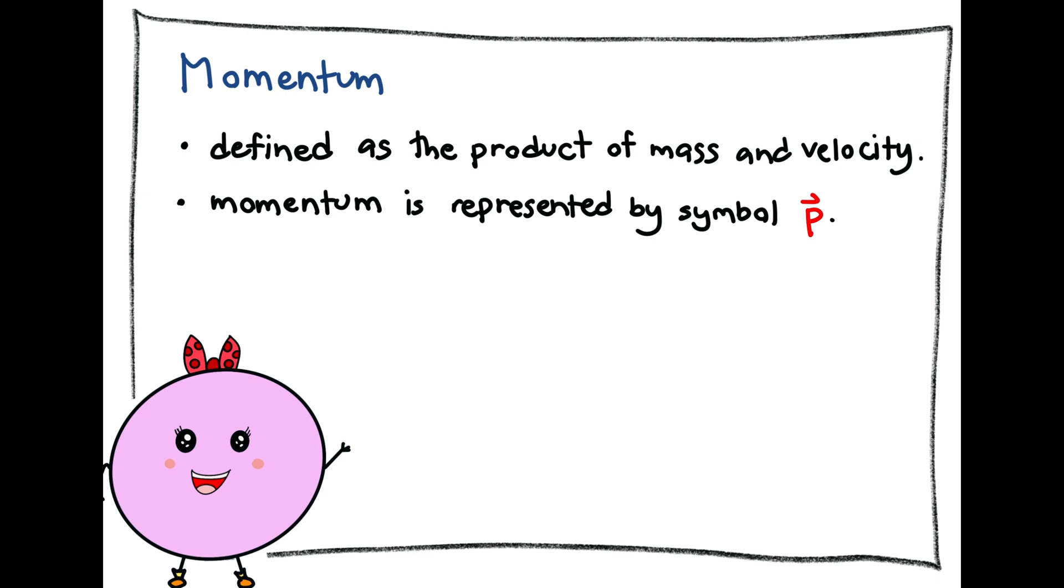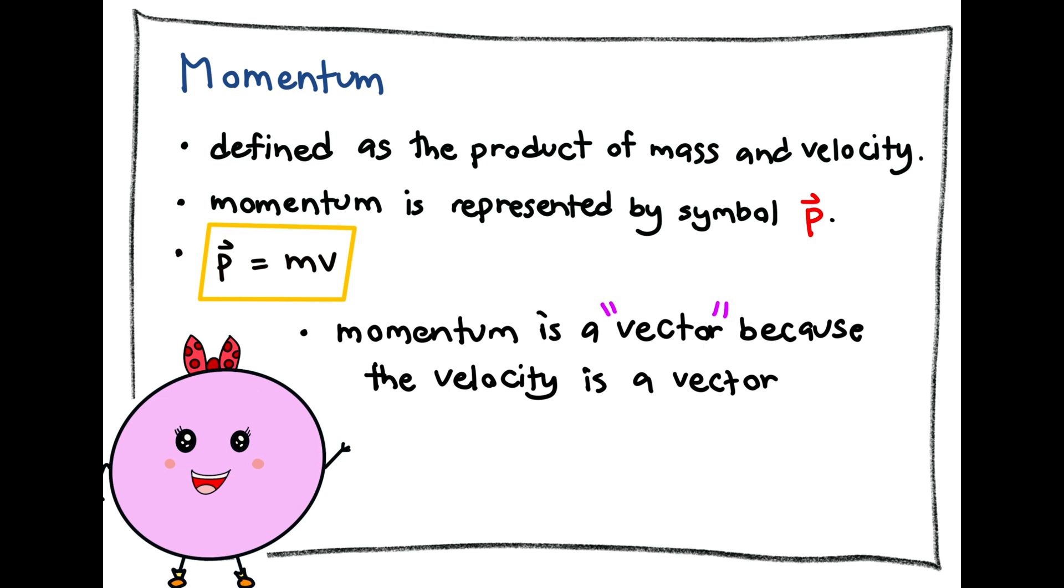Momentum is defined as the product of mass and velocity and is represented by the symbol p and the formula p equals mv. Momentum is considered a vector because velocity is a vector, so therefore the direction of the momentum is equal to the direction of velocity.